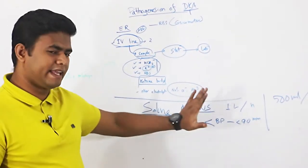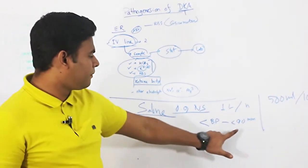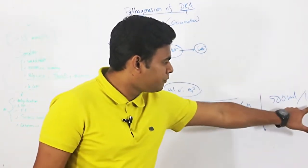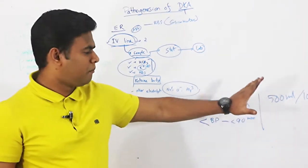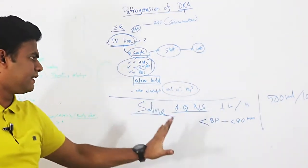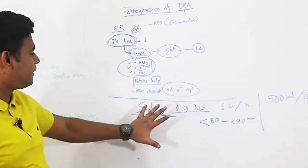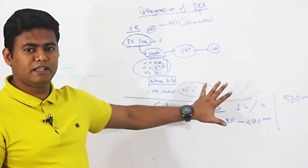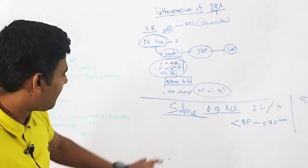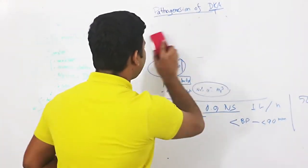We will start saline at 1 liter per hour. But if the patient is in shock, we will resuscitate within 5–10 minutes with a bolus. These are the earliest and most important steps. So we proceed with saline.